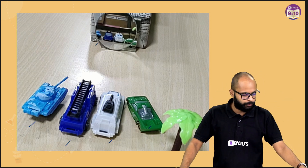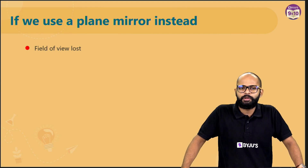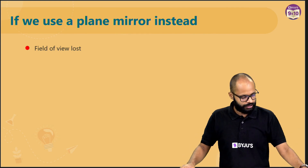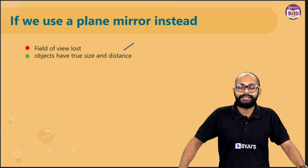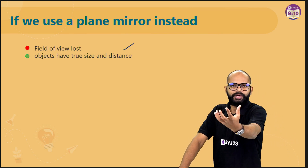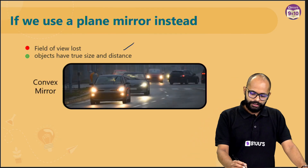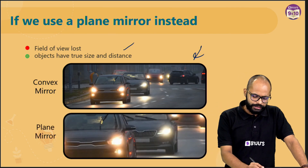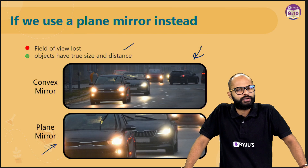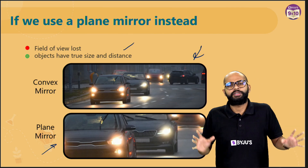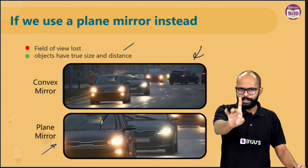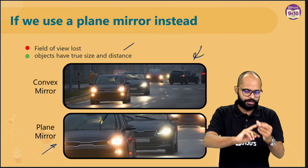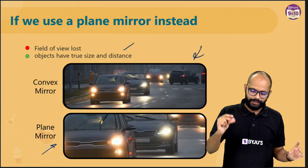If we use a plane mirror, the field of view is lost — the advantage you had with the convex mirror is gone. Objects will appear at their true size and will look bigger compared to the convex mirror. With a convex mirror you could see the complete road, but with a plane mirror you see bigger vehicles but not the complete view. That is the problem if you replace convex mirrors in rear view mirrors with plane mirrors.